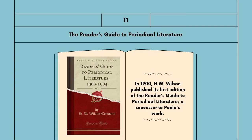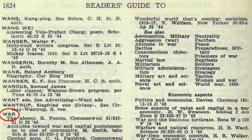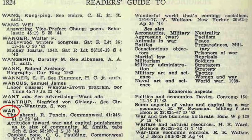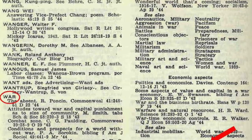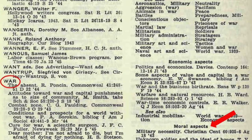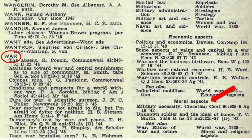In 1900, H. W. Wilson published its first edition of the Reader's Guide to Periodical Literature, a successor to Poole's work. This index was especially notable for the emphasis it placed on subject access and good cross-referencing. Each article in a periodical was indexed under its author and its specific subject. Numerous cross-references linked up each subject with related subjects and with aspects of the subject.